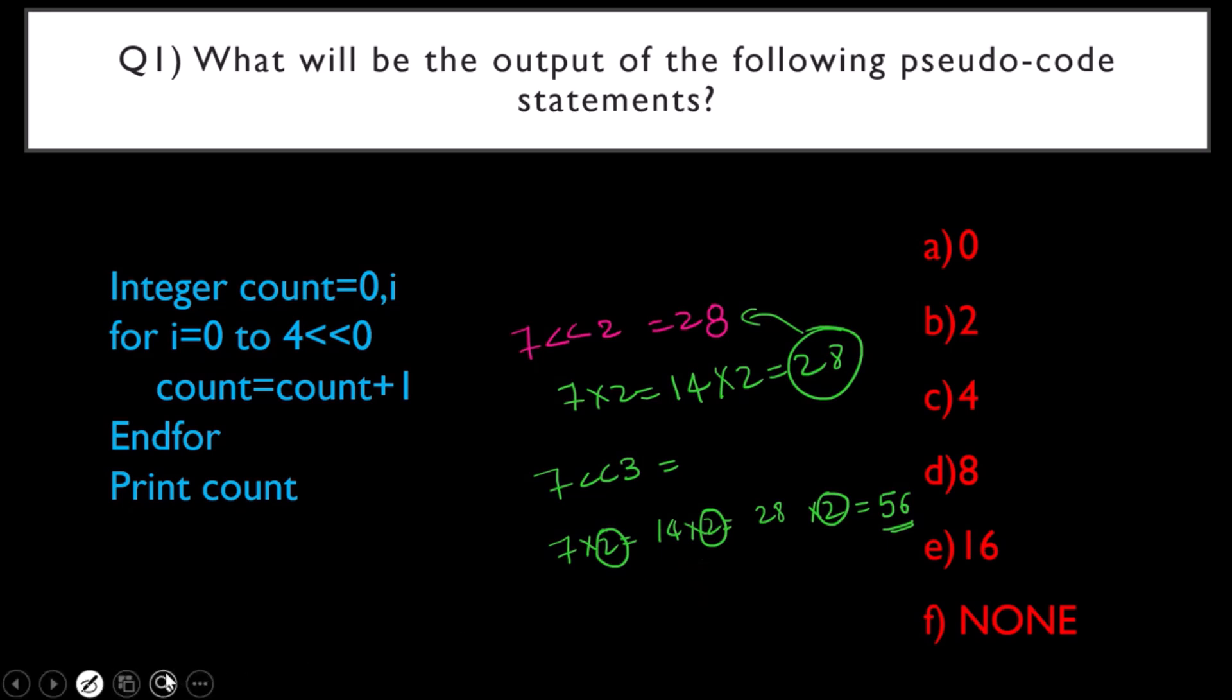Remember, 7 left shift 2 or any number left shift 2 means multiplying it by 2 that many number of times. Similarly,